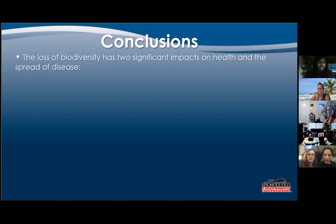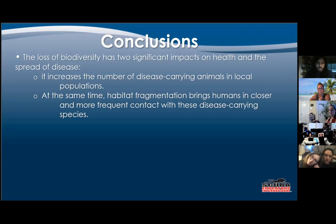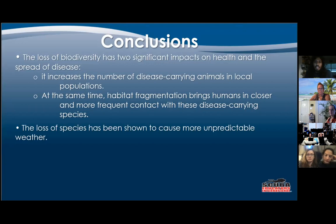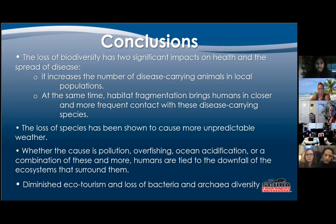Our conclusions: the loss of biodiversity has two significant impacts on the health and spread of disease. It increases the number of disease-carrying animals in local populations and at the same time habitat fragmentation brings humans into more frequent contact with these disease-carrying species. The loss of species has been shown to cause more unpredictable weather, whether the cause is pollution, overfishing, ocean acidification, or a combination — humans are tied to the downfall of ecosystems that surround them. Diminished ecotourism and loss of bacteria and archaeodiversity are also seen, and that's important for things like B12 production and DNA.